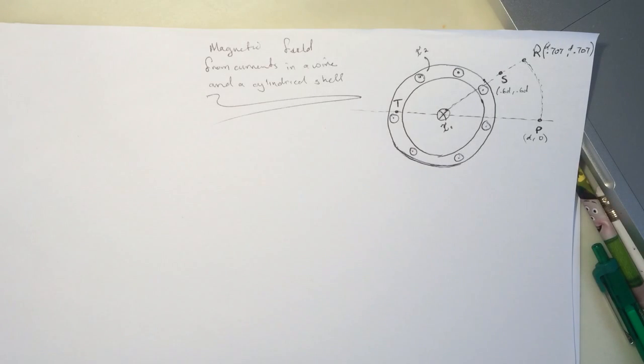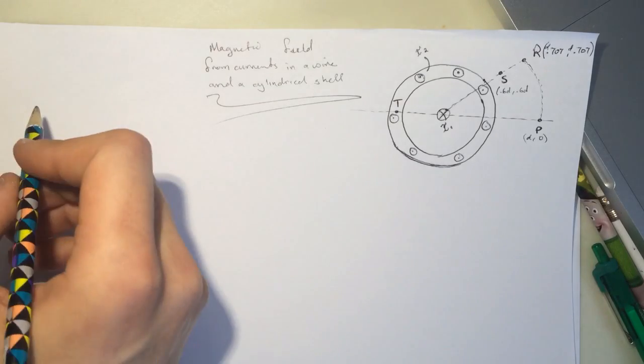Hi guys, this is a smart physics tutorial for a problem called magnetic fields from currents in a wire and a cylindrical shell. You can read the question below in the description. So let's start with the first question.